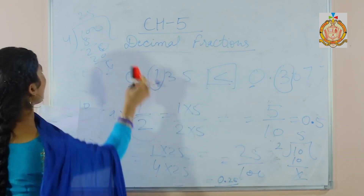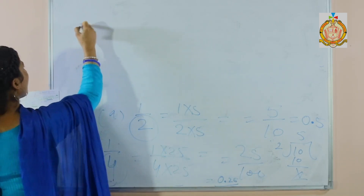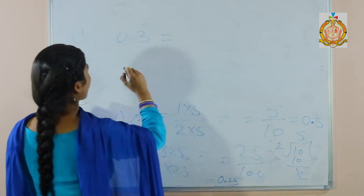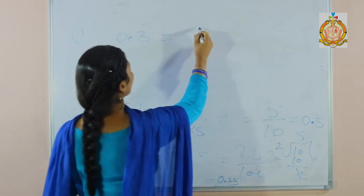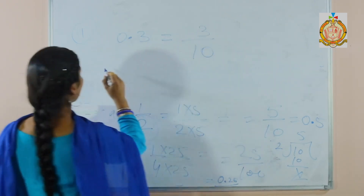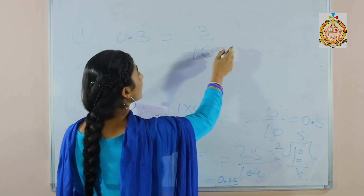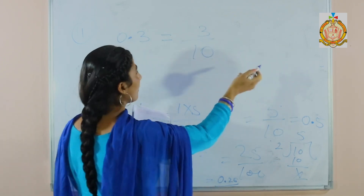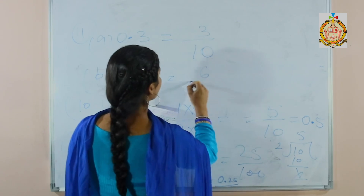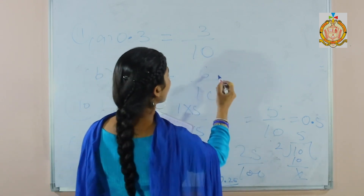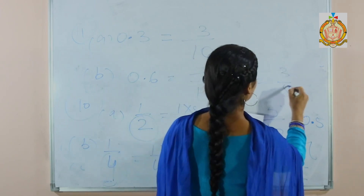Now 11th part — last part of this exercise: convert the decimal fraction into a common fraction. The decimal fraction is given and you have to convert it into a common fraction. Here there is one decimal place after the decimal, so 3 over 10. You cannot simplify this because 3 and 10 have no common factor. Now part B: 0.6 — 6 over 10 will come. You can simplify this because 6 and 10 have common factor 2. Cut on the table of 2: the answer is 3 over 5.